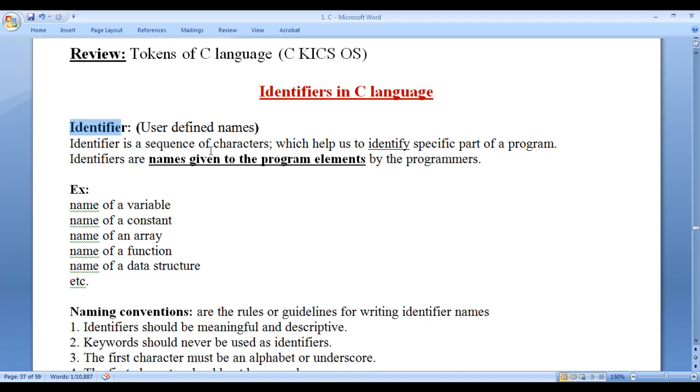What is an identifier? As the name itself indicates, identifier means to identify. An identifier is a sequence of characters which helps us identify a specific part of a program. Identifiers are names given to the program elements by the programmers. User-defined names are called identifiers.